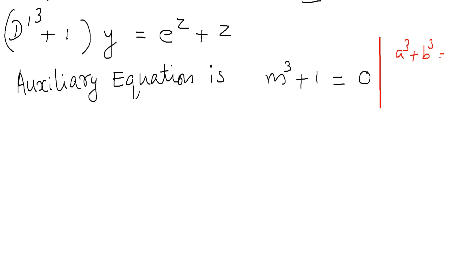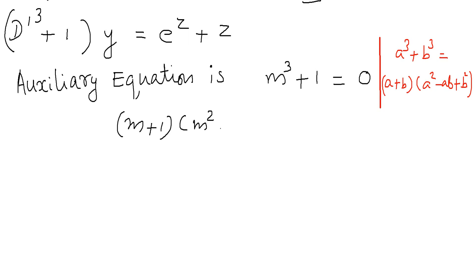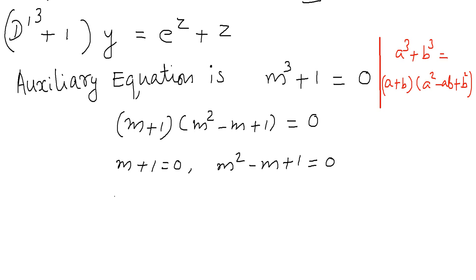The auxiliary equation is m³ + 1 = 0. We know that a³ + b³ = (a + b)(a² − ab + b²). Therefore m³ + 1 can be written as (m + 1)(m² − m + 1) = 0. That gives m + 1 = 0, so m = −1, and the complex roots are m = (1 ± i√3) / 2.